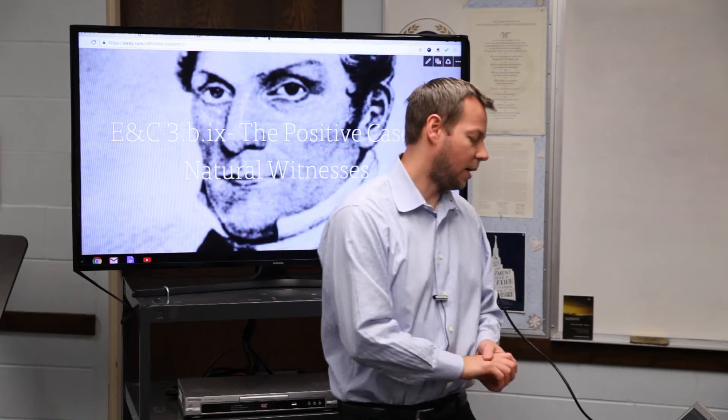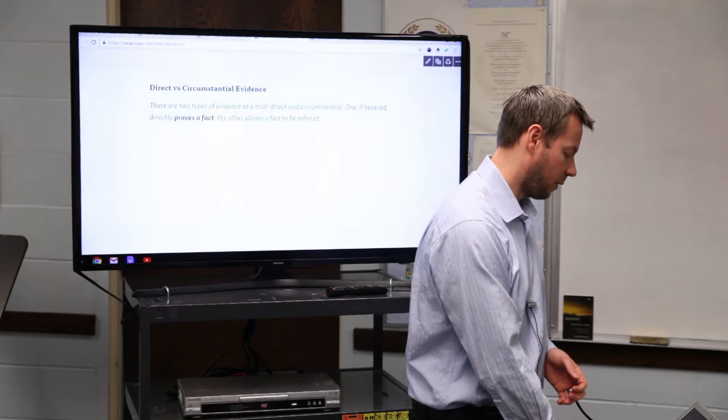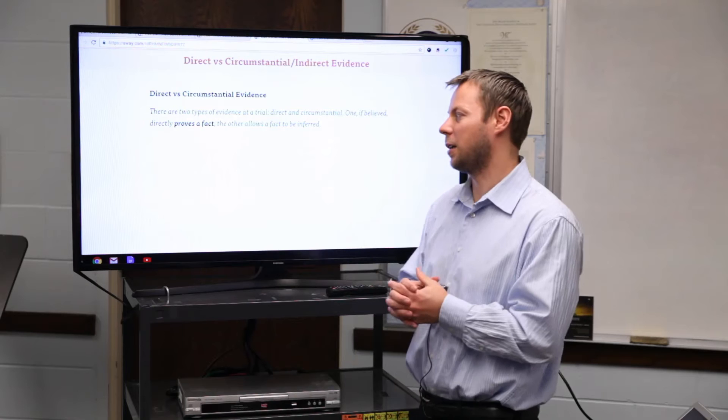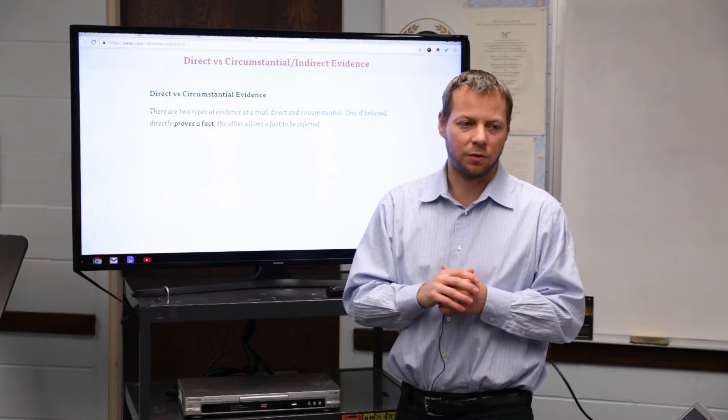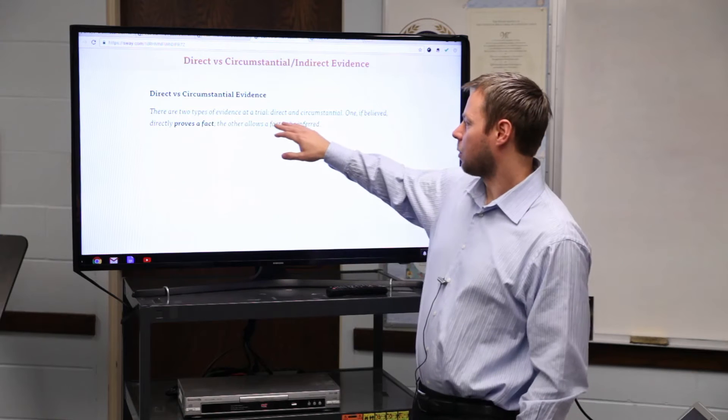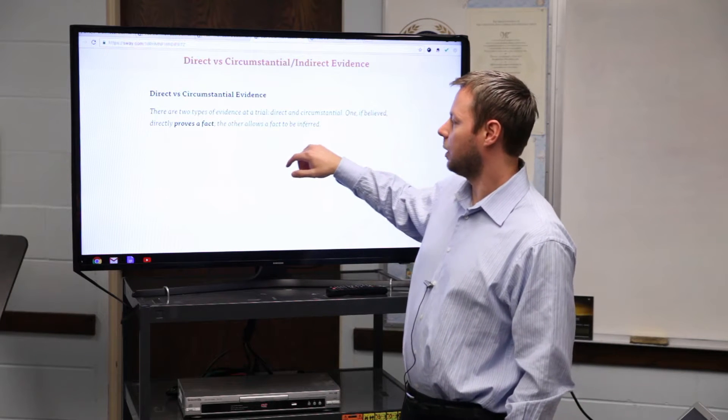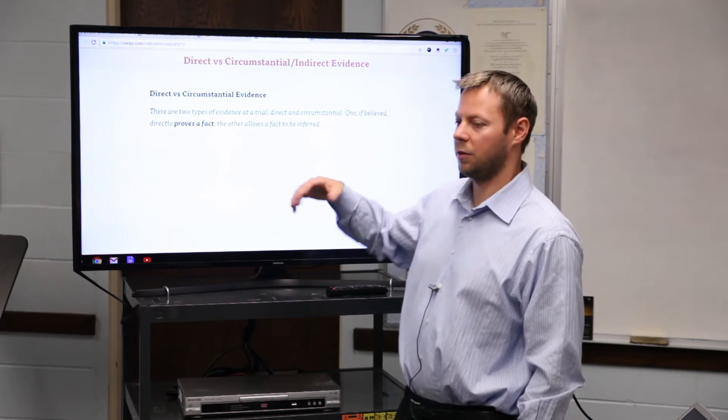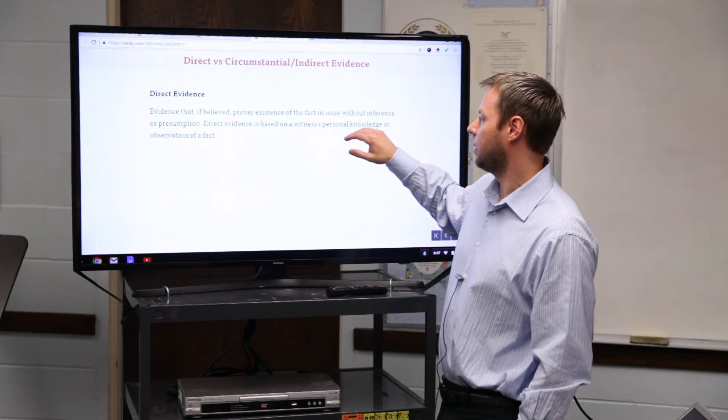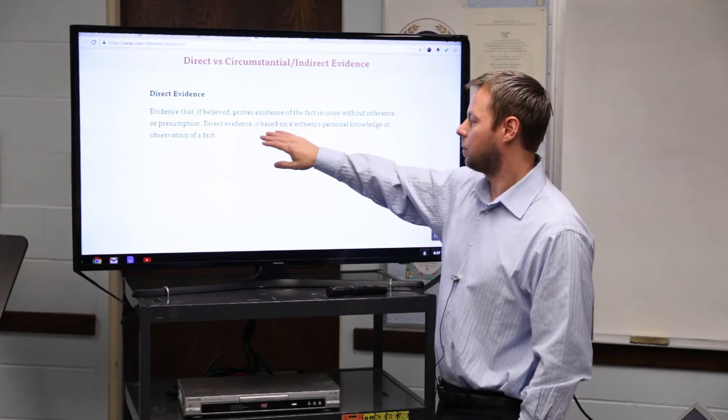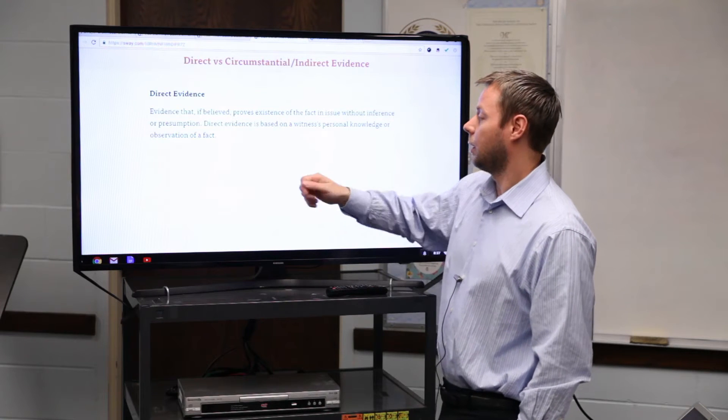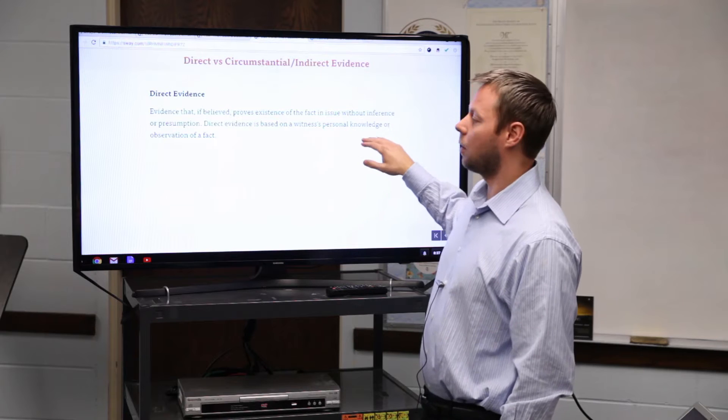We're going to move now to the last of the eight natural witnesses. As we end the last of our discussion of the direct evidence, I just want to make this really clear that there's two types of evidence when you go to court: direct and circumstantial. One, if believed, directly proves a fact. The other allows for a fact to be inferred. Direct evidence, if believed, proves the existence of the fact in issue without inference or presumption. It's usually on witnesses, sometimes nowadays it's a videotape, so some sort of recording of an event, but it's based on a witness's personal knowledge or observation of the fact.